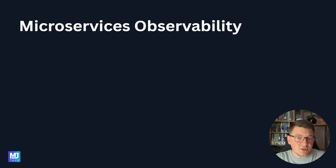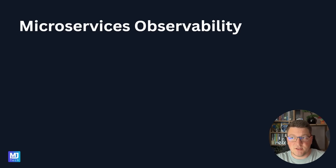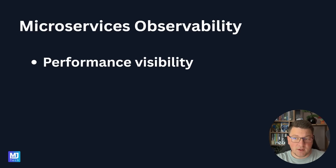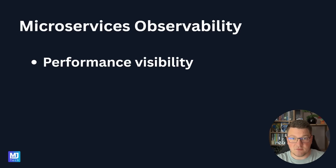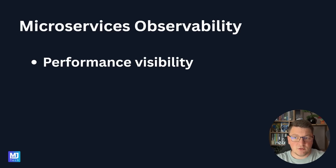I want to start off by introducing a couple of problems that naturally occur when you're working with a microservices architecture. Let's call these the microservices observability problems. The first one is having visibility into the performance of your microservices system. It's usually fairly simple to figure out where the performance bottlenecks are inside of a single microservice, but when they need to interact with each other, it becomes increasingly more difficult to pinpoint where the actual performance problem is.